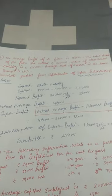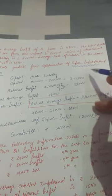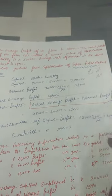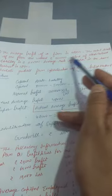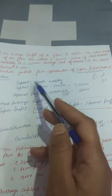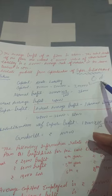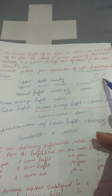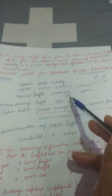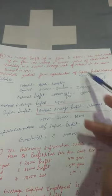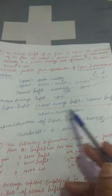First, we will calculate the super profit, for which we need two types: actual profits and normal profits. Capital is assets minus liabilities, which gives us 3 lakh. Normal profit will be capital employed multiplied by rate of return divided by 100, which is 36,000. The actual profit is given in the question as 48,000.